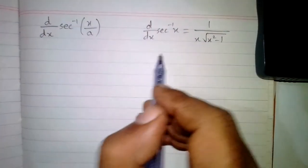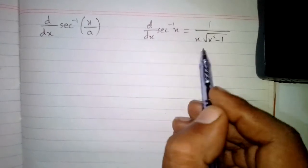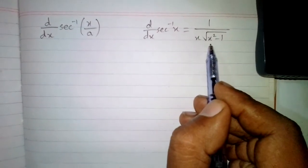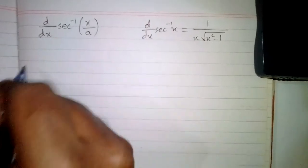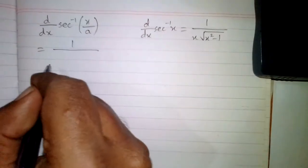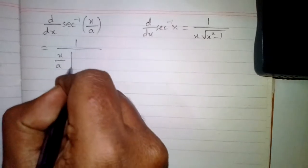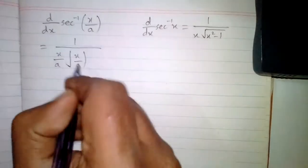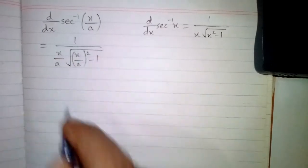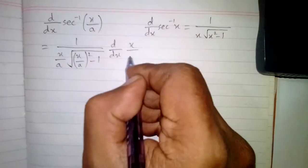We can see that we have x upon a in place of x. So we will put x upon a in place of x. The derivative of sec inverse x upon a is 1 upon (x/a) square root of (x/a) squared minus 1, multiplied by the derivative of x upon a.